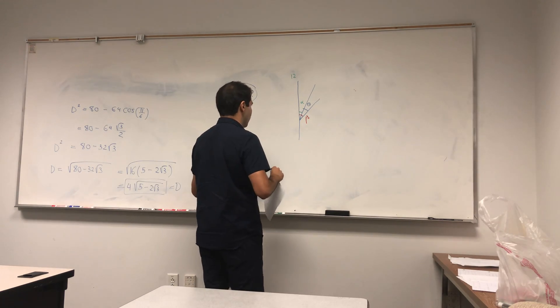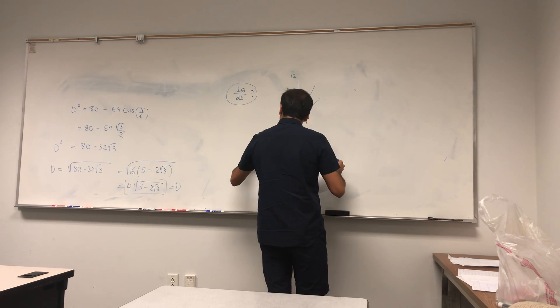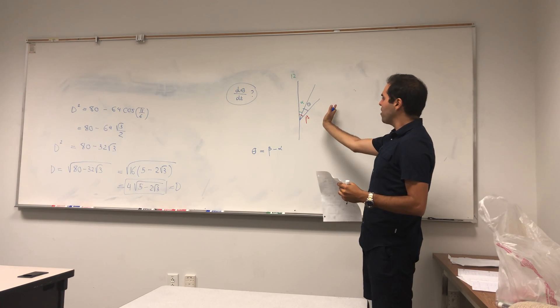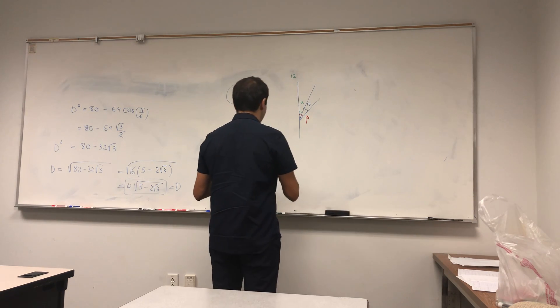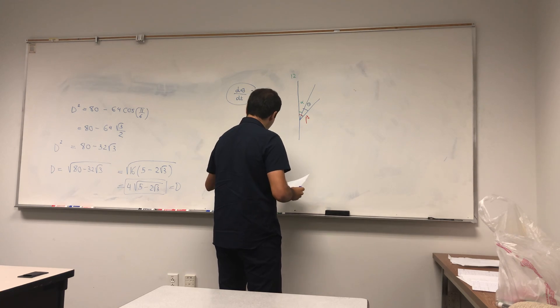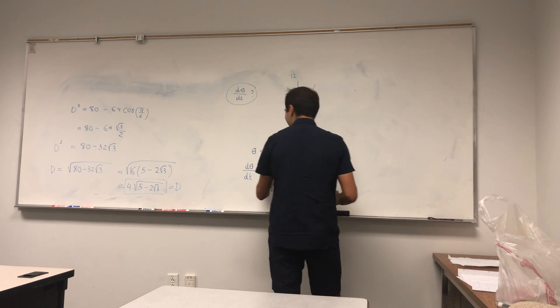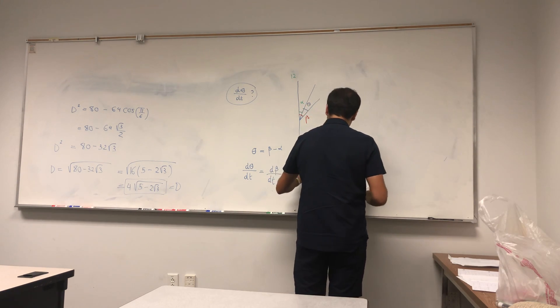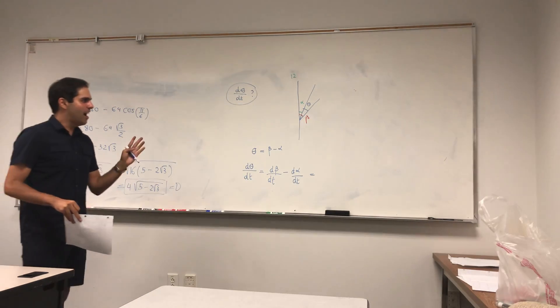Because those are two quantities both in motion, and we want to figure out theta from those two quantities, d(theta)/dt. And notice, at least based on this picture, theta is just beta minus alpha. It's just sort of how the hour hand moves minus how the minute hand moves. So d(theta)/dt then just becomes d(beta)/dt minus d(alpha)/dt.